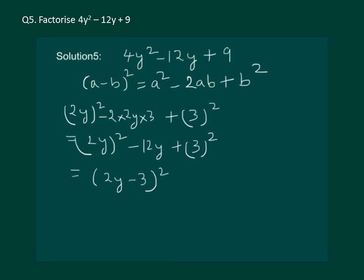You should have noticed that we are basically checking whether our question is comparable to the right side of the identity. Only then, we can apply a minus b whole square at this stage. So, that's why we take just 2 terms from our question, which can be made perfect square and try to compare it with the identity.